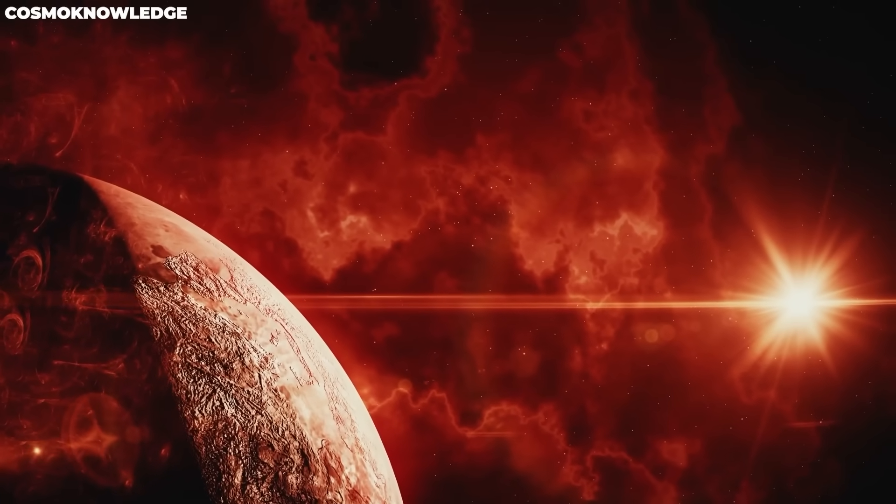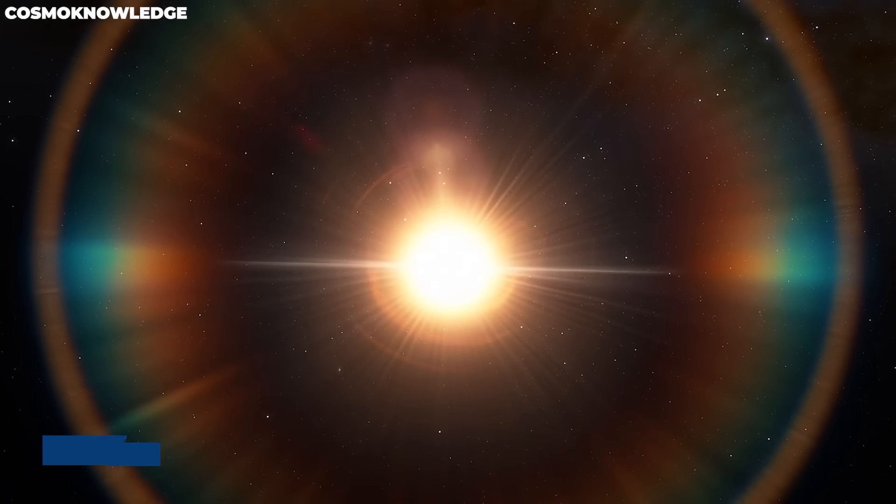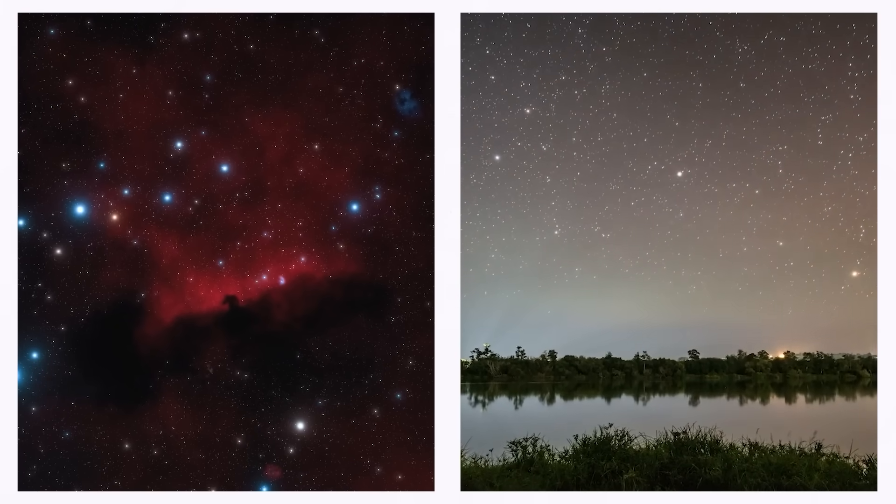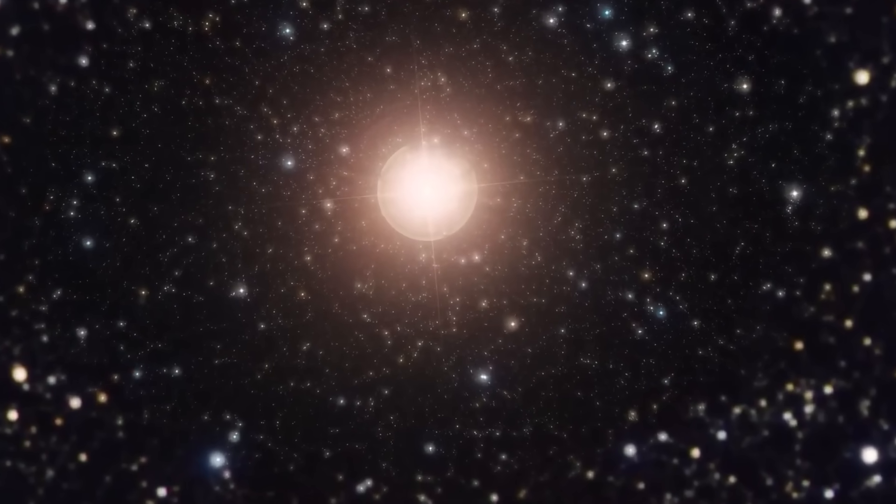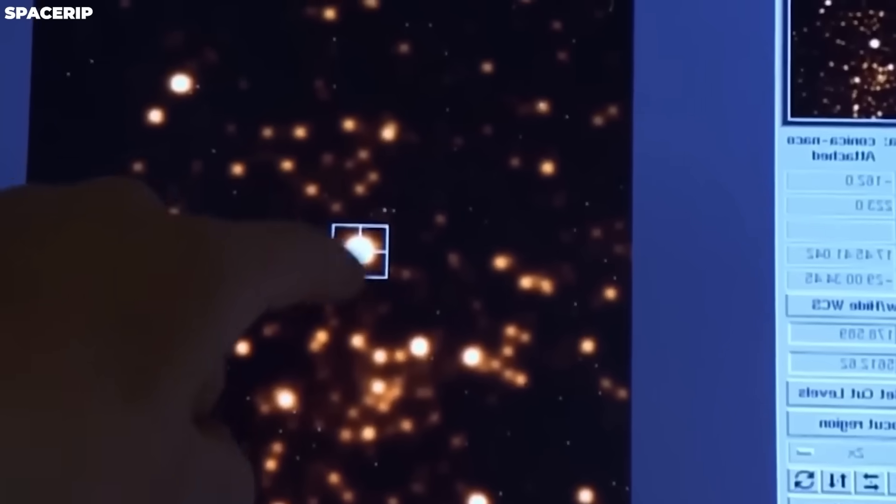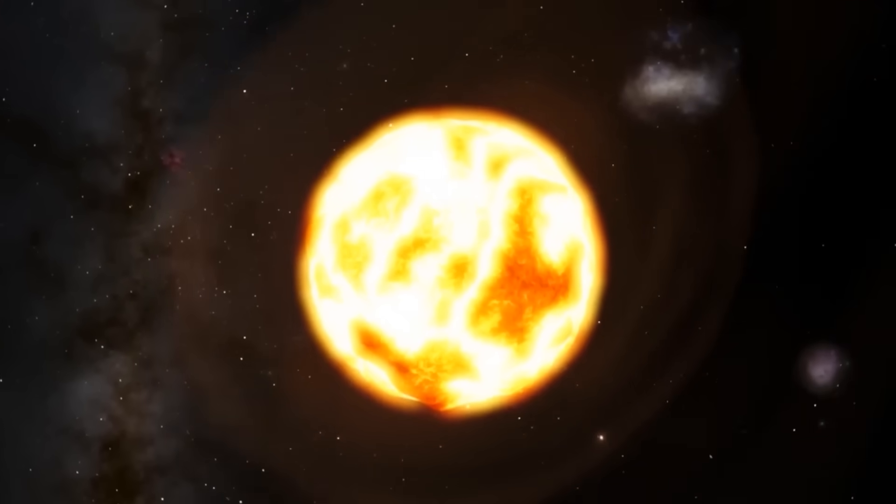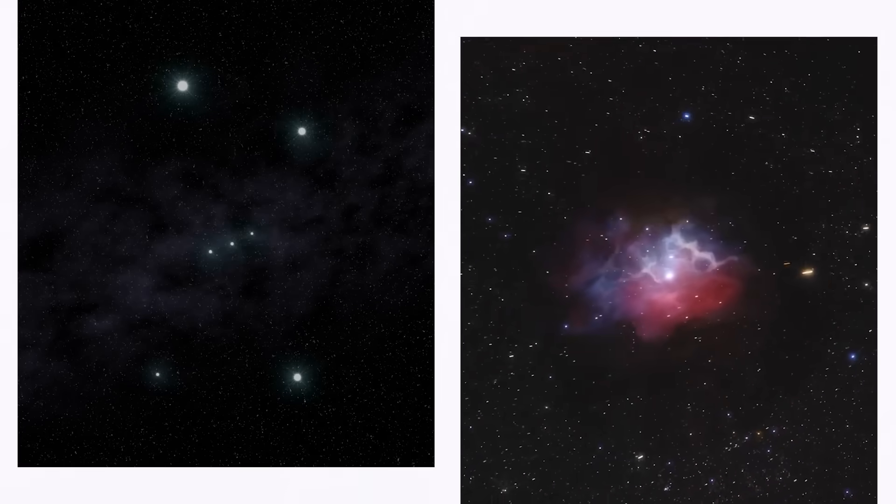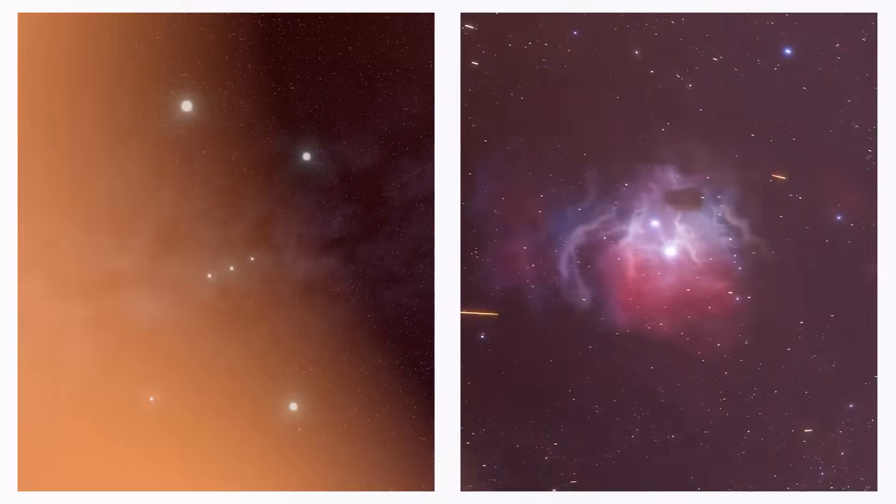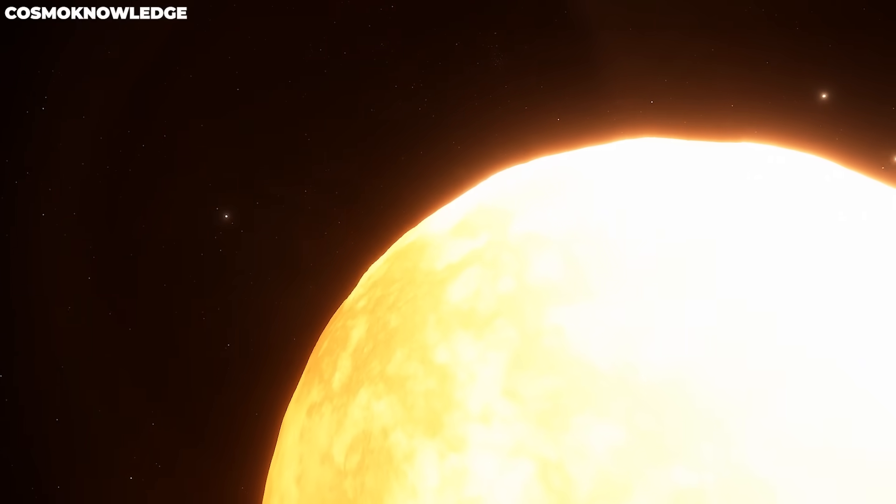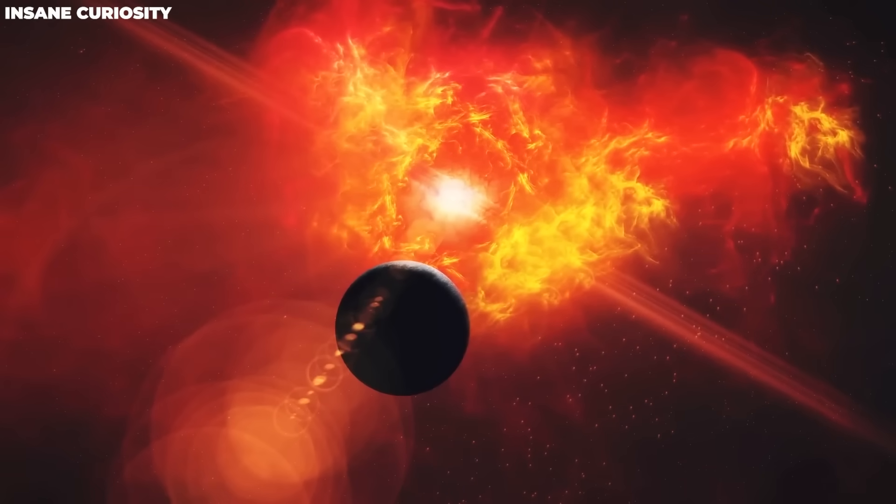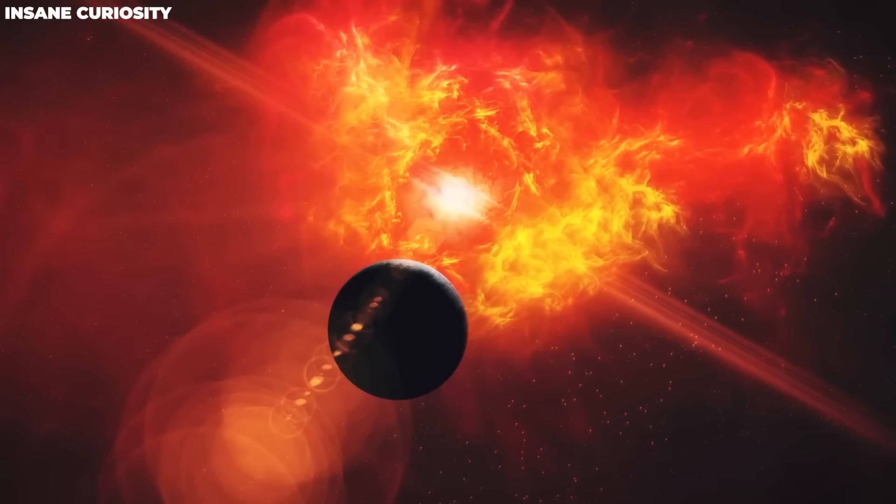We've known about Betelgeuse for a long time. A Greek scientist named Ptolemy also studied it. At that time, the only thing people knew about stars was their color. Ptolemy said that Betelgeuse was an orange color. Scientists have been studying this star even more closely lately, and now have a good idea of what makes it so strangely bright. Betelgeuse is a variable star, which means that its brightness changes over time. But recently, experts have learned something new about the star. In 2019, scientists first noticed that Betelgeuse was acting oddly.